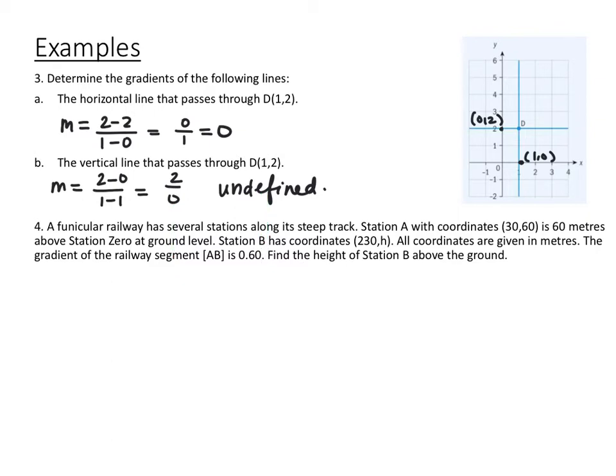Number 4 says a funicular railway has several stations along its steep track. Station A with coordinates 30, 60 is 60 meters above station 0 at ground level. Station B has coordinates 230, h. All coordinates are given in meters. The gradient of the railway segment AB is 0.60. Find the height of station B above the ground. They're giving us the gradient of the railway, and they want us to find the height. Go ahead and pause the video and try that.